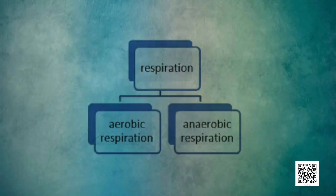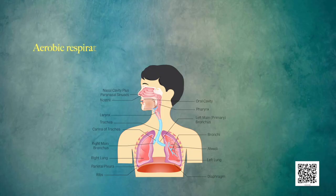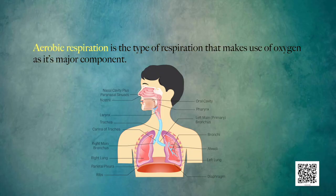Broadly, respiration can be classified into two types: aerobic respiration and anaerobic respiration. Aerobic respiration, as the word indicates — like aerobic exercises and aerobic dance — involves oxygen as the major component. Aerobic respiration is the type of respiration that makes use of oxygen as its major component, whereas anaerobic respiration is the opposite — it occurs in the absence of oxygen.